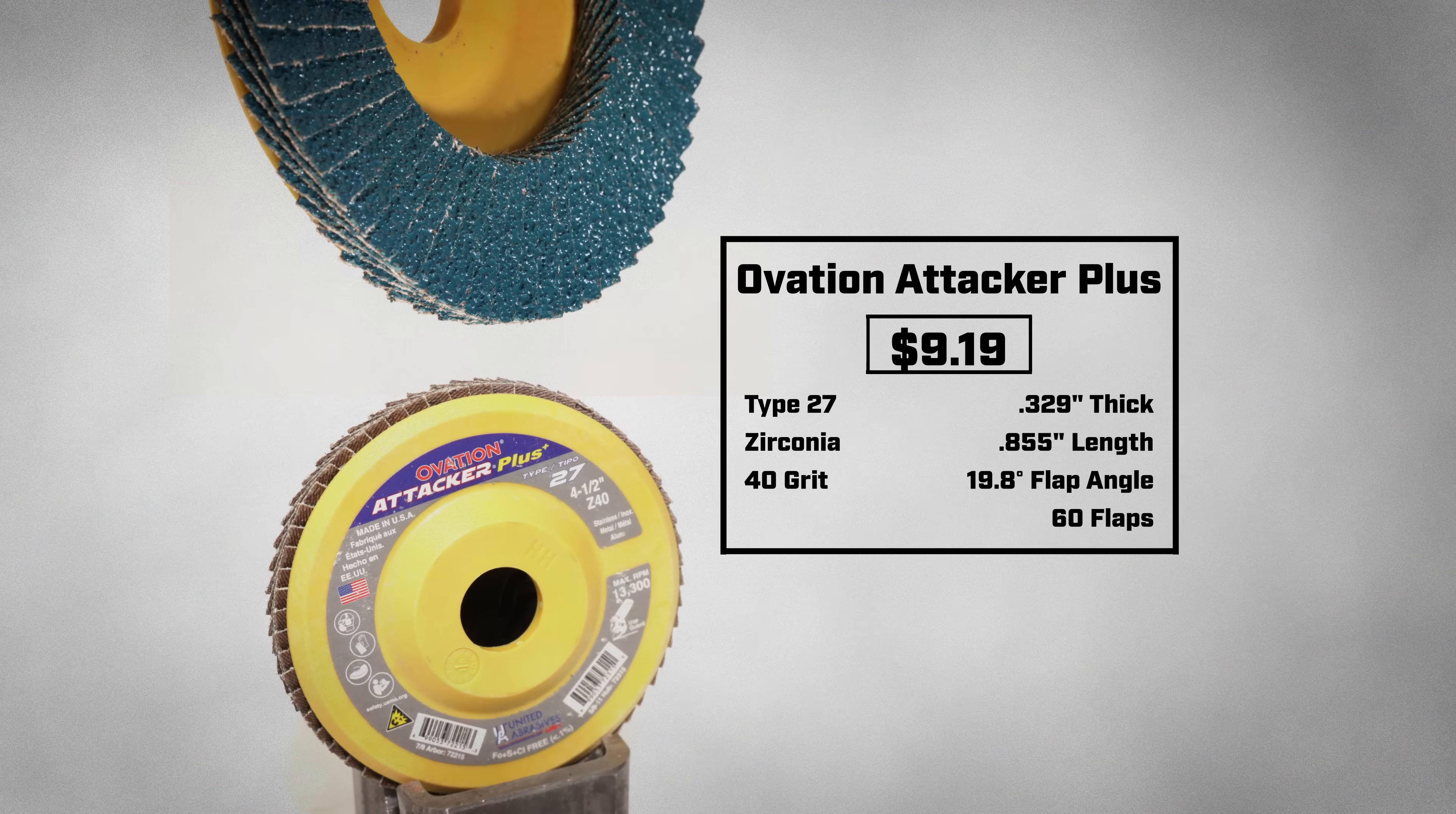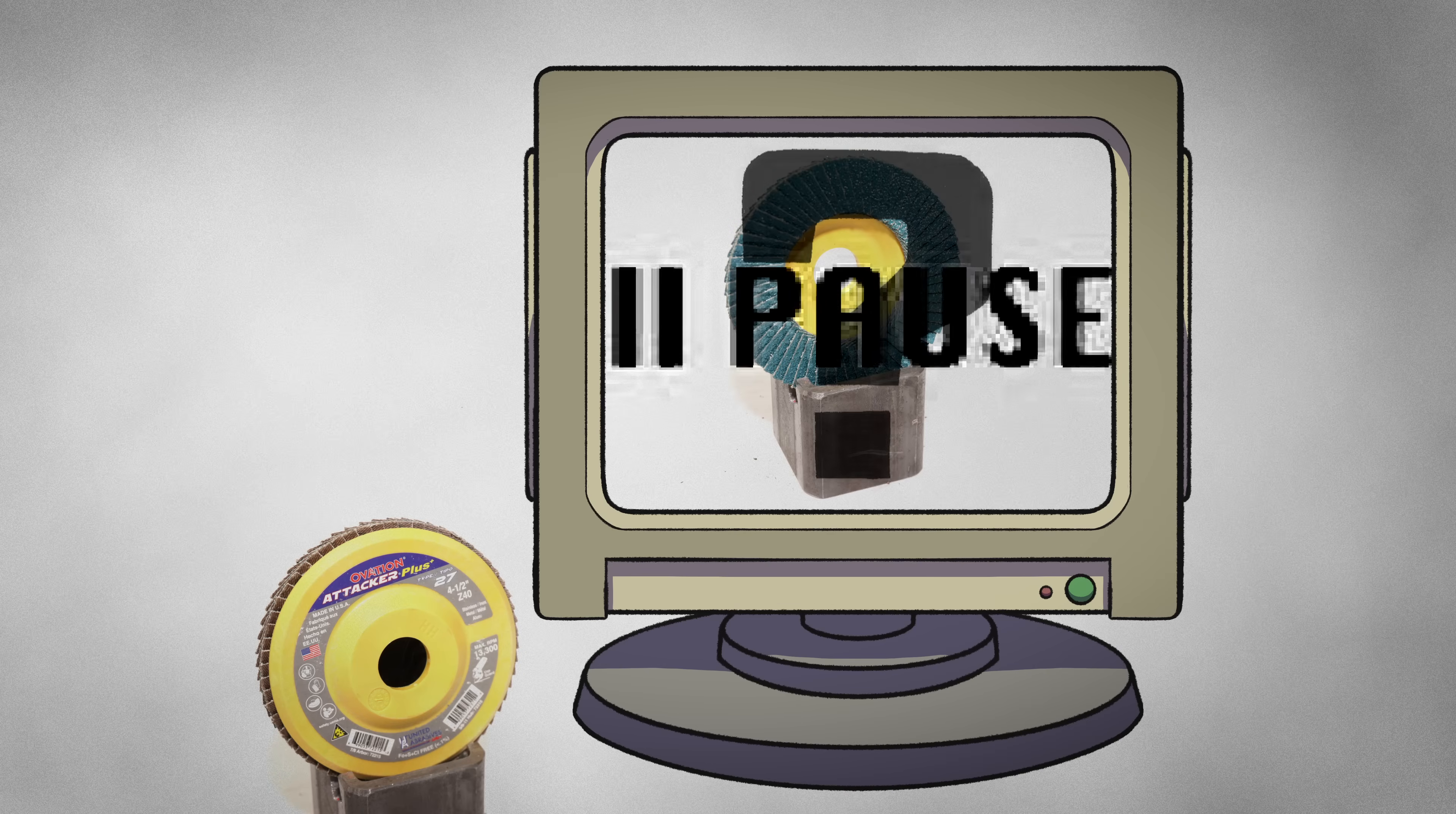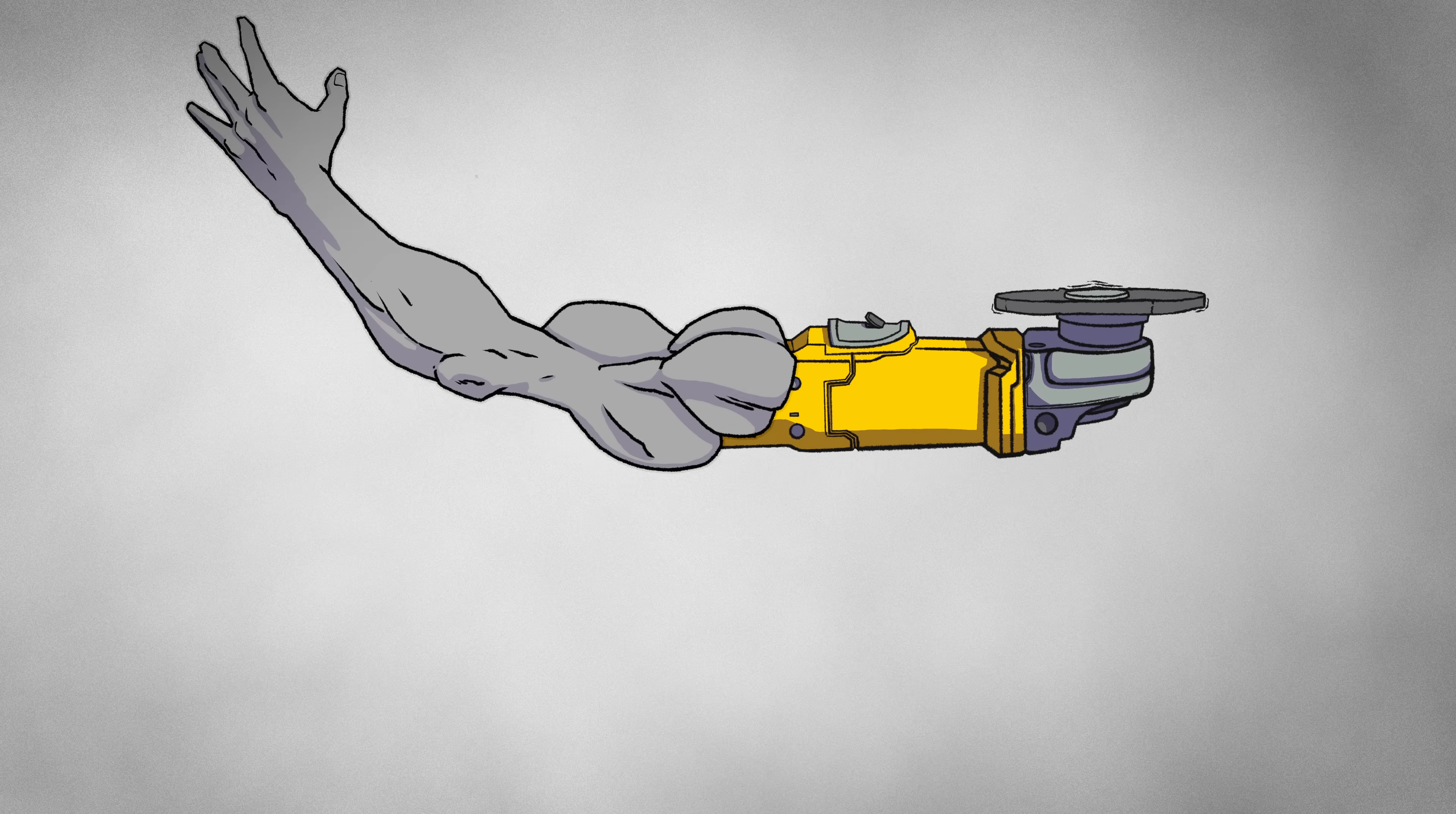Today I am testing the Ovation Attacker Plus Type 27 Flap Disk coming in at $9.19. This is what I would consider a premium-priced disk. But does it live up to its price point? Well, consensus online is actually quite empty. There doesn't seem to be any discussion online around this disk, but that doesn't mean plenty of people aren't still buying this disk totally blind. So instead, I'll test this disk myself to identify its strengths and weaknesses, so you know what you're buying.